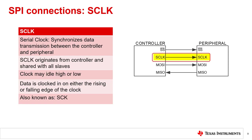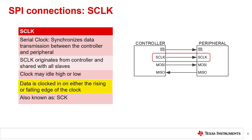SCLK is the serial clock. It is used by the controller to synchronize data sent between the controller and the peripheral device. The SCLK originates from the controller and is sent to all peripheral devices. This serial clock may not always be in operation and may idle as a high or low signal. Data is clocked into the controller or peripheral at either the rising edge or falling edge of the serial clock. The SCLK line may also be labeled as SCK.